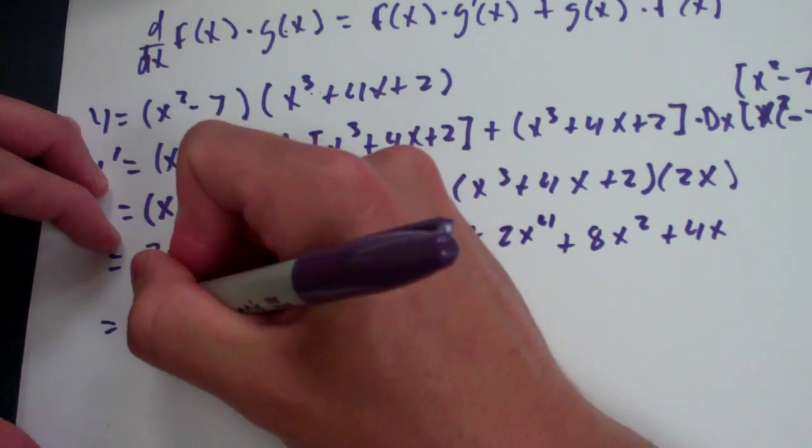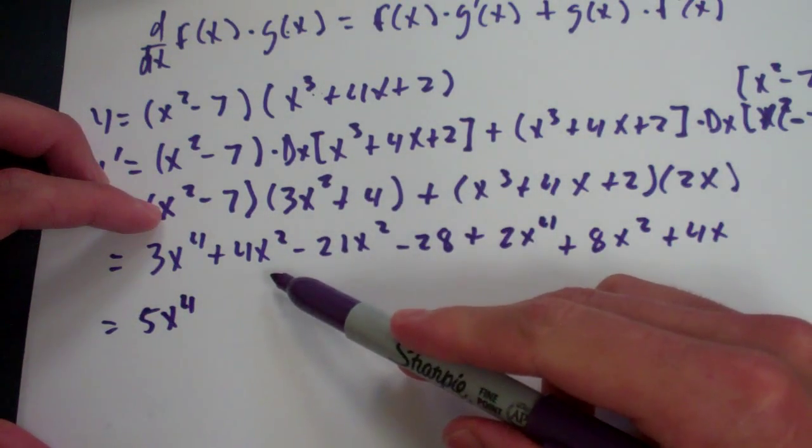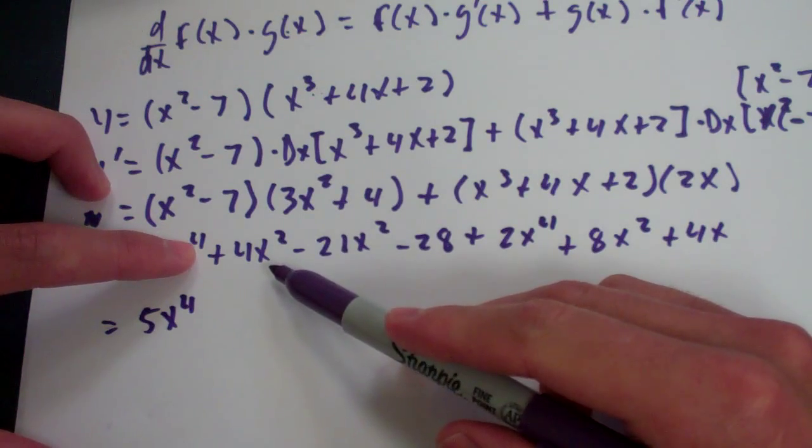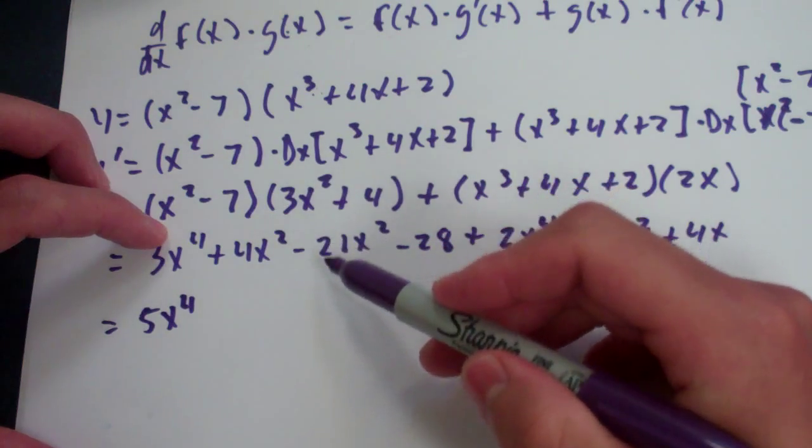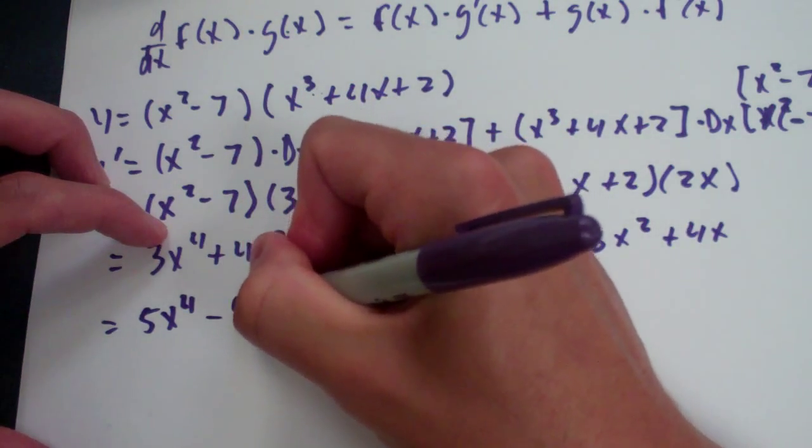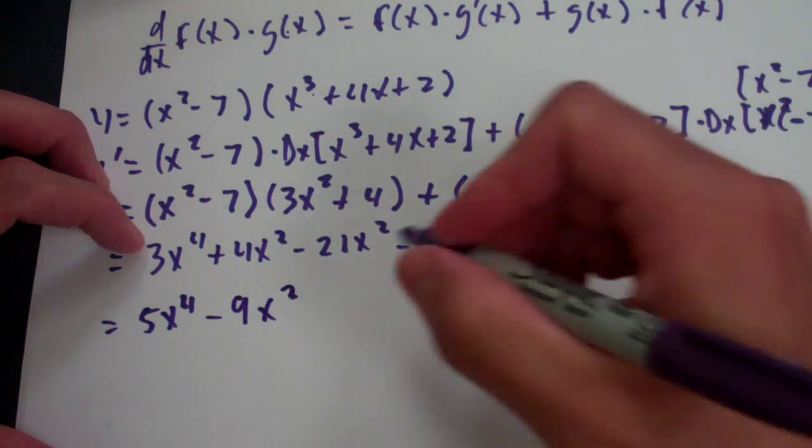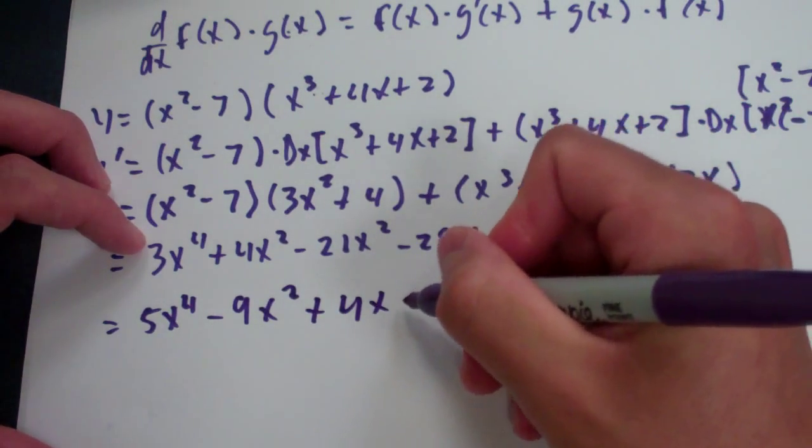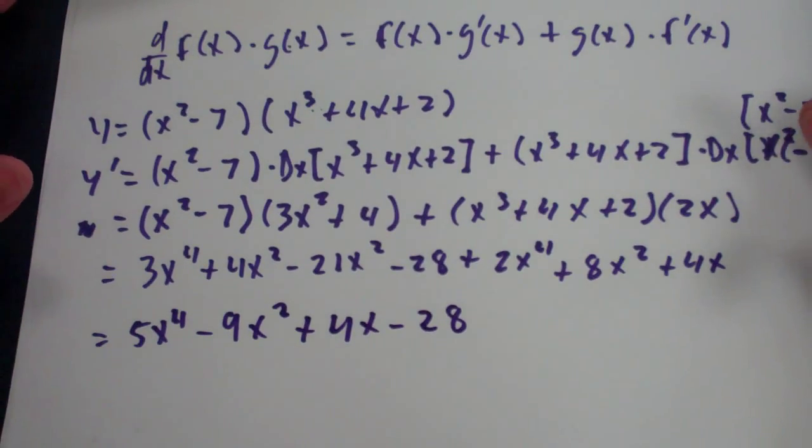We have 5x to the 4th, and then we have these x squareds right here. And actually, 4x squared minus 21x squared and 8x squared is negative 9x squared. And then, what else do we have? Oh, we have a plus 4x. And we have a minus 28. So, that's the derivative. Not too hard, right?